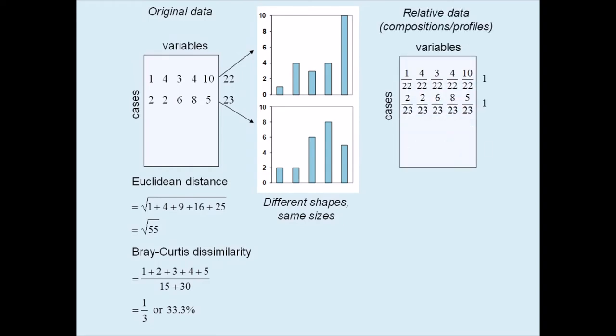The proximity measures between the profiles are now no longer 0. Notice that in this example the Bray-Curtis has behaved practically identically to the Euclidean distance, even though the Euclidean distance would never be chosen by ecologists as a proximity measure between sets of counts.